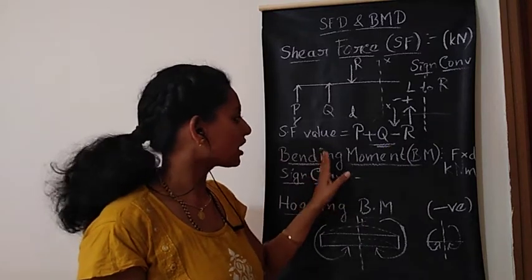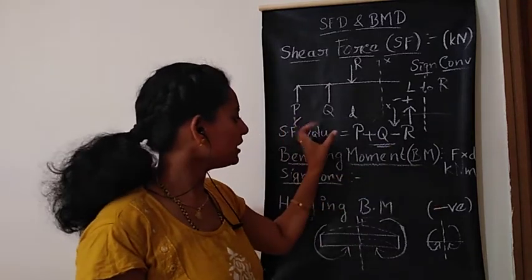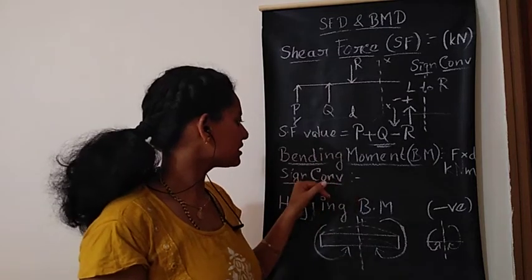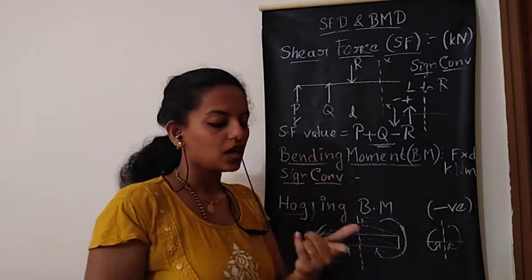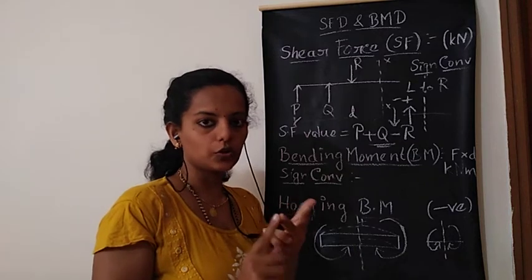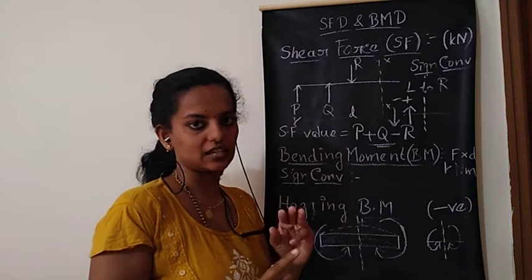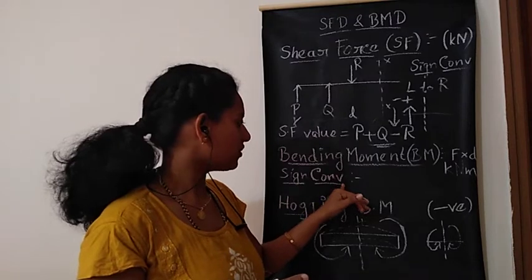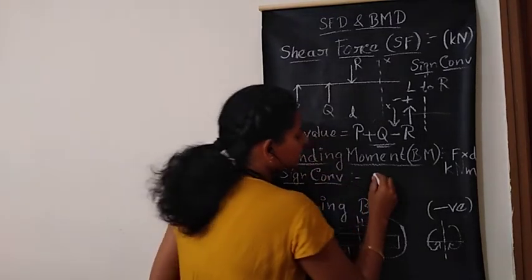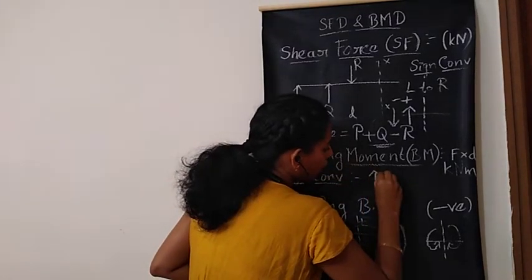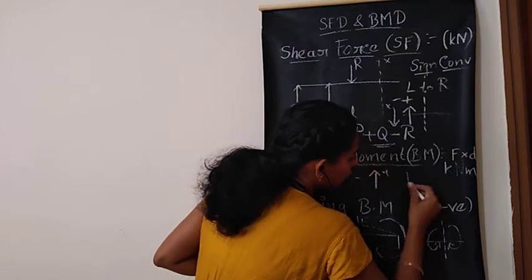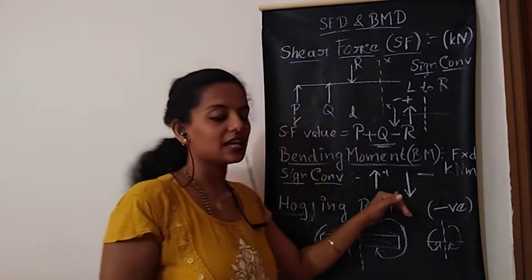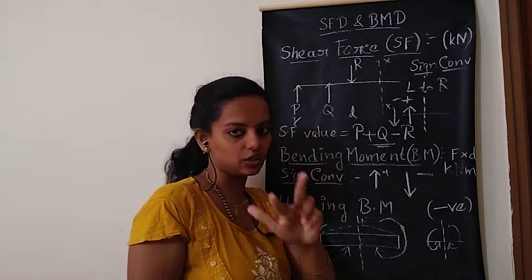That means you have to consider again the moment along with the sign. So for that case, the sign convention will be there. For point load, UDL and UVL, we can consider this sign convention for bending moment — it will be upward always positive and downward always negative. That is for the case of point load, UDL and UVL.